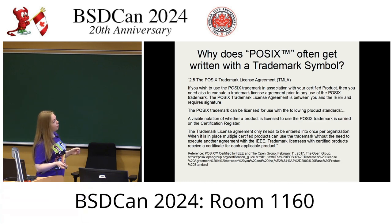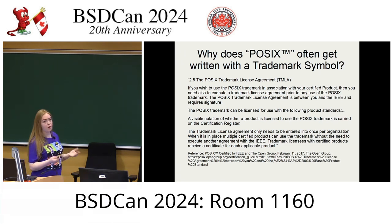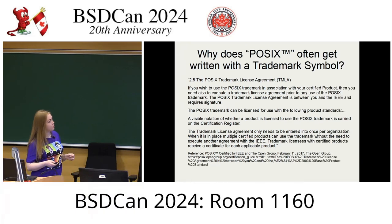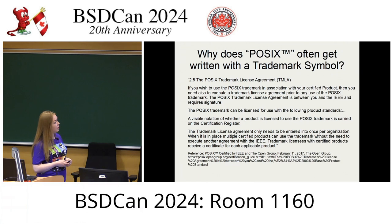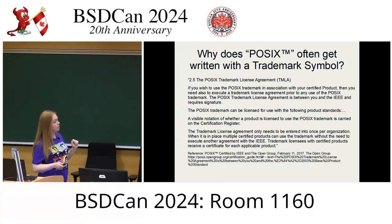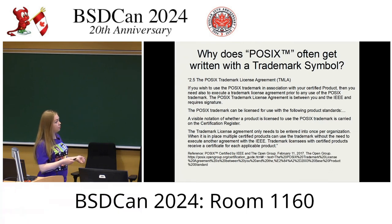Why does POSIX often get written with a trademark symbol? POSIX is protected under a trademark license agreement (TMLA). If you wish to use the POSIX trademark in association with your certified product, you need to execute a trademark license agreement with the IEEE prior to any use. The POSIX trademark can be licensed for specific product standards. A visible notation of whether a product is licensed to use the trademark is carried on the certification registrar. The trademark license agreement only needs to be entered into once per organization, and multiple certified products can then use the trademark without executing another agreement.